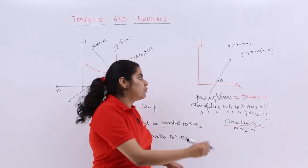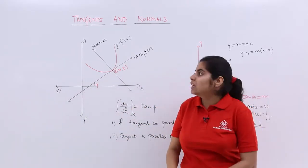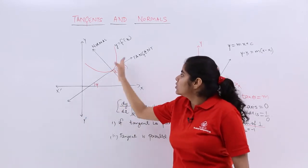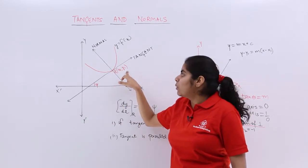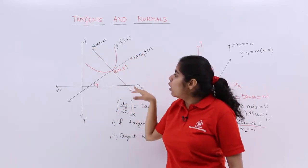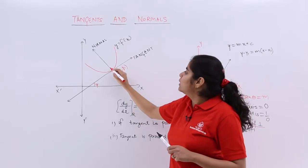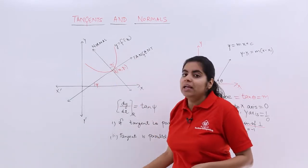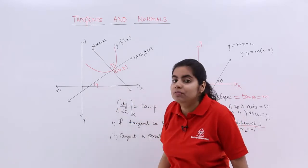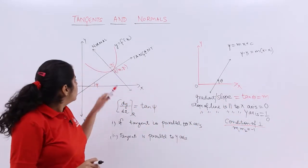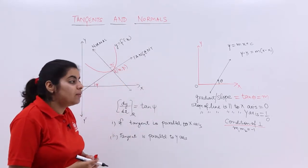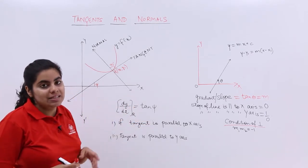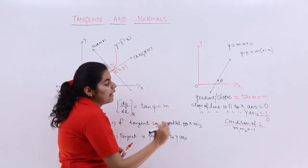With that knowledge, let's move to this diagram. We have a curve y = f(x), and this curve has a tangent at point r(x1, y1). There is also a normal to this tangent — the angle between the normal and the tangent is 90°. The tangent makes an angle of ψ with the positive direction of the x-axis. Since the tangent is like a line making angle ψ, its slope is dy/dx at point r, which is nothing but tan ψ, and that is the slope m.